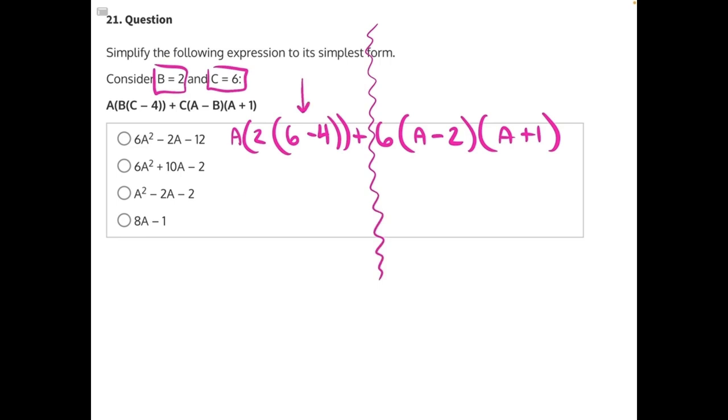6 minus 4 will give us 2, so this will become A times 2 times 2. Then we can use distributive property. 2 times 2 would give us 4, so this becomes A times 4. And then distributive property again, A times 4 would give us 4A.